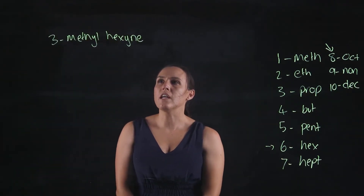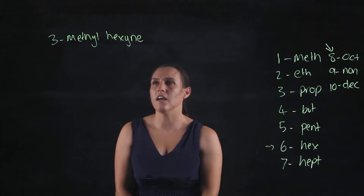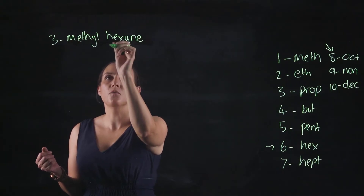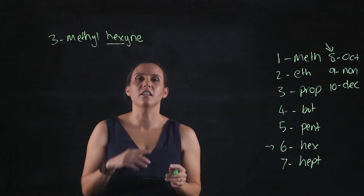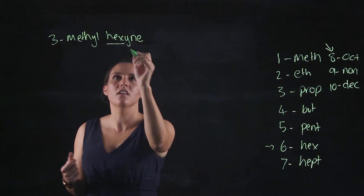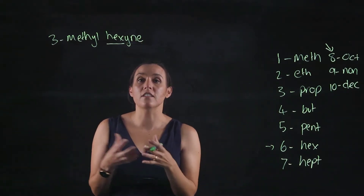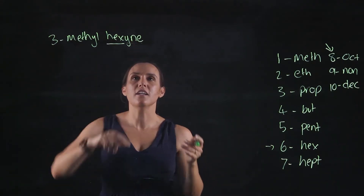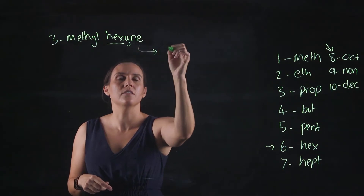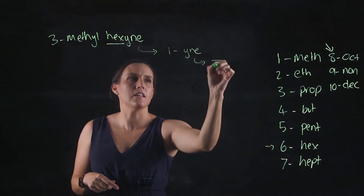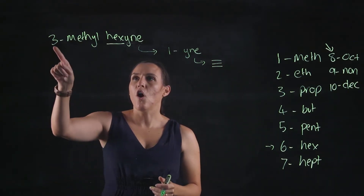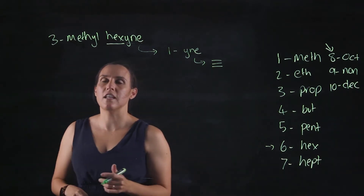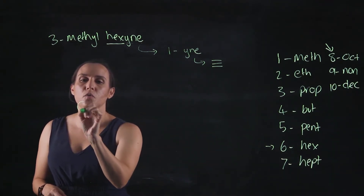Let's do this one: 3-methylhex-1-yne. The first thing you want to do is look at what makes up the backbone — the number of carbons. Hex tells you the chain length. Yne tells you there is a triple bond, and because there's no number specified, that triple bond will be on the first carbon. On the backbone, position three has a methyl attached, which is a single carbon.